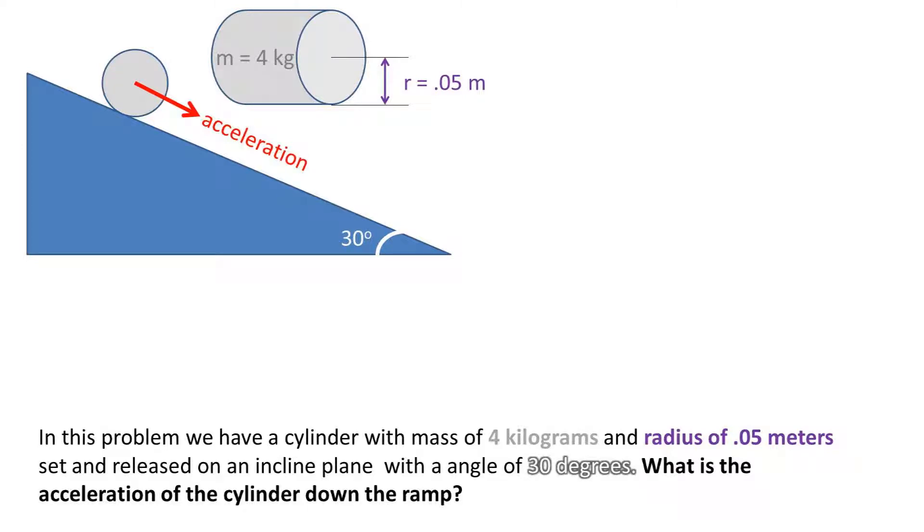In this problem, we have a cylinder with mass of 4 kilograms and a radius of 0.05 meters. We set the cylinder on an inclined plane with an angle of 30 degrees. What is the acceleration of the cylinder down the ramp?